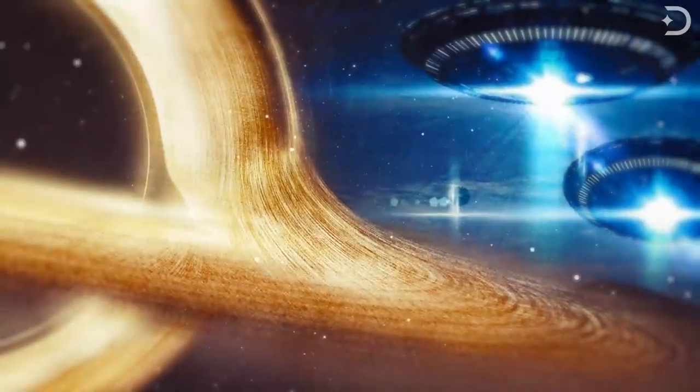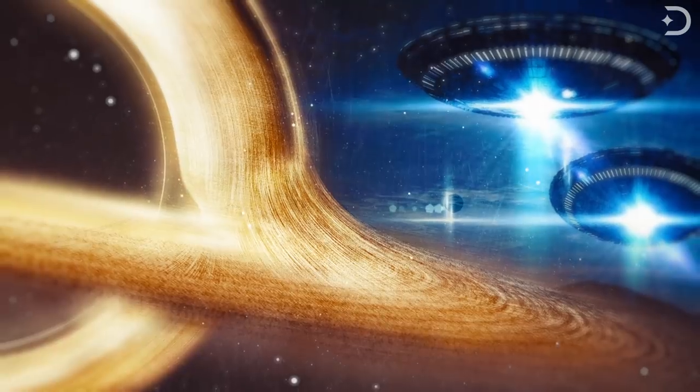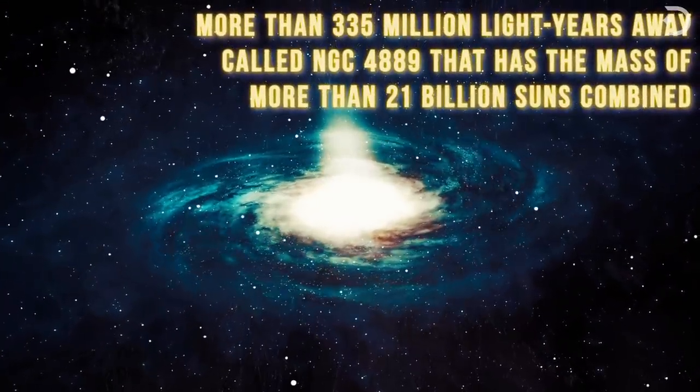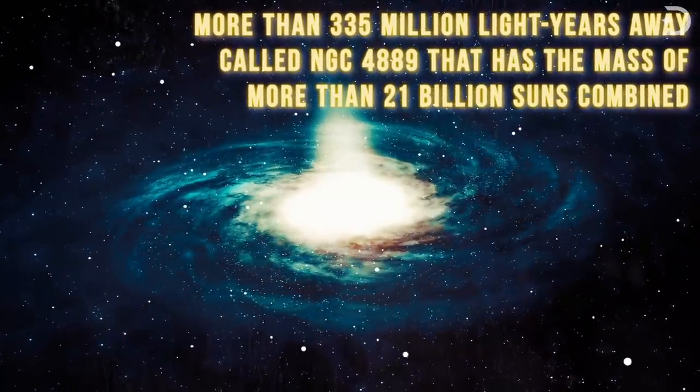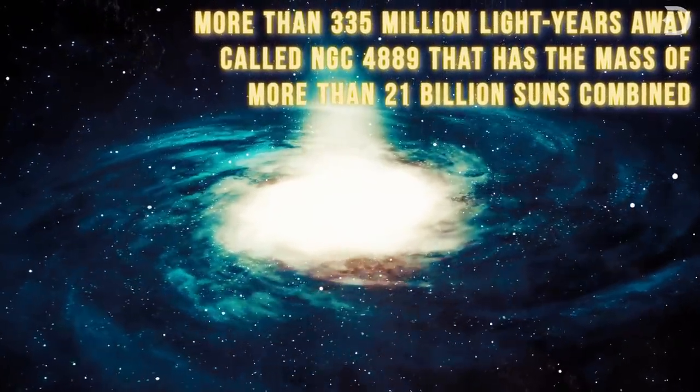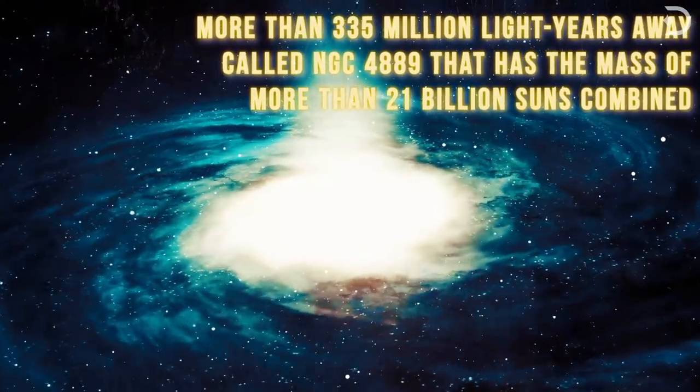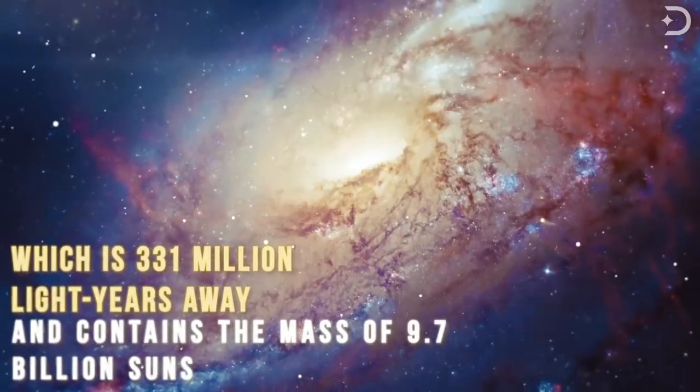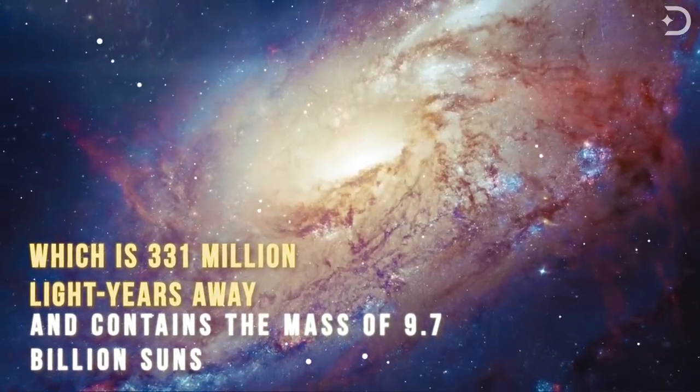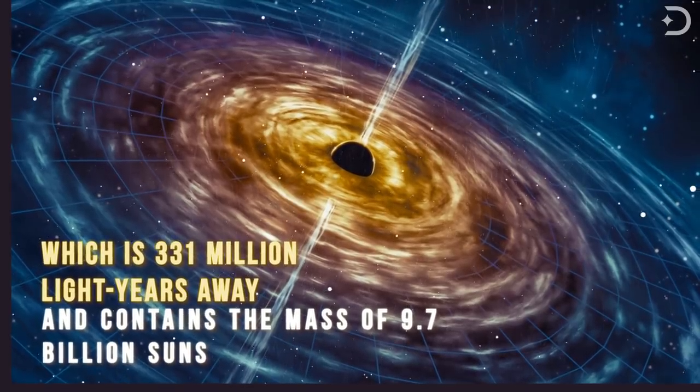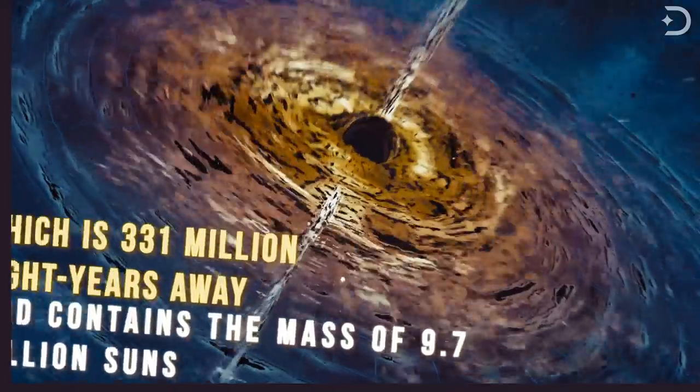They are larger than anything ever found and could be home to the oldest civilizations because of the ancient stellar population. One of these is at the center of an egg-shaped galaxy, more than 335 million light-years away, called NGC 4889, and it has a mass of more than 21 billion suns combined. And there is another behemoth at the center of NGC 3842, which is 331 million light-years away, and contains the mass of 9.7 billion suns.